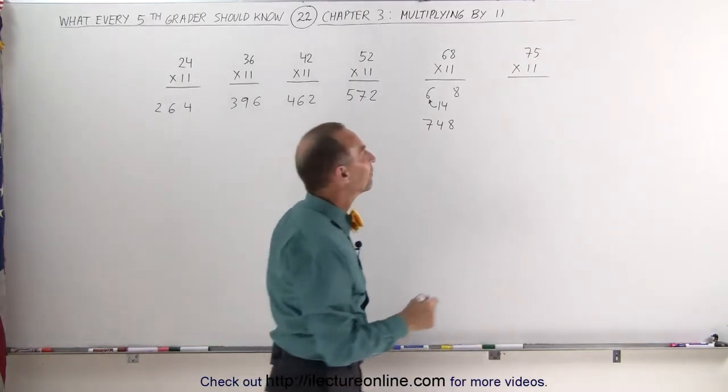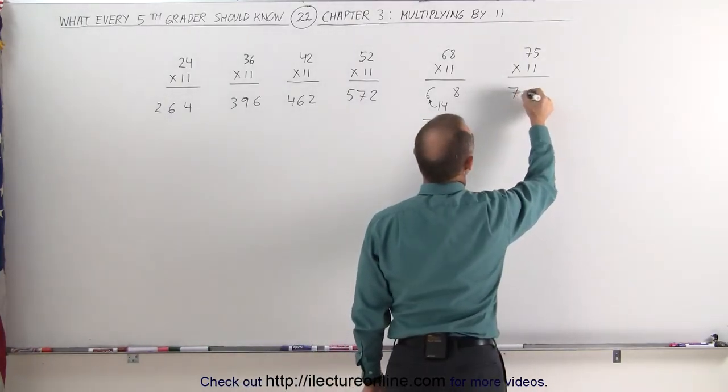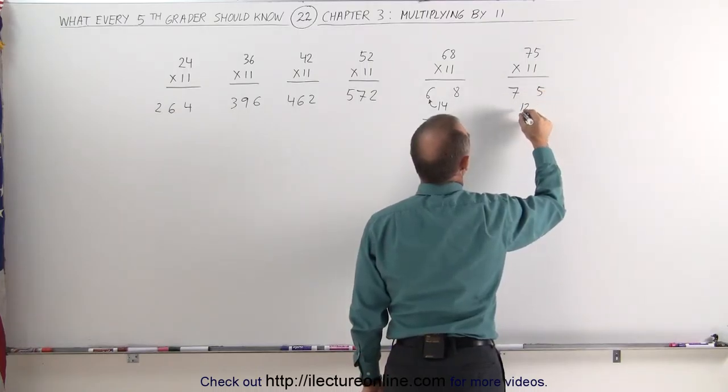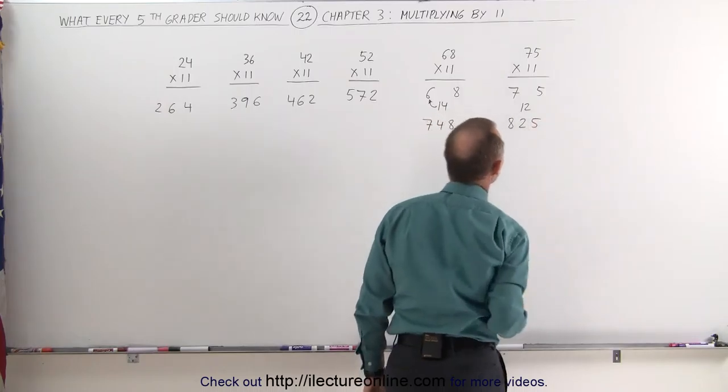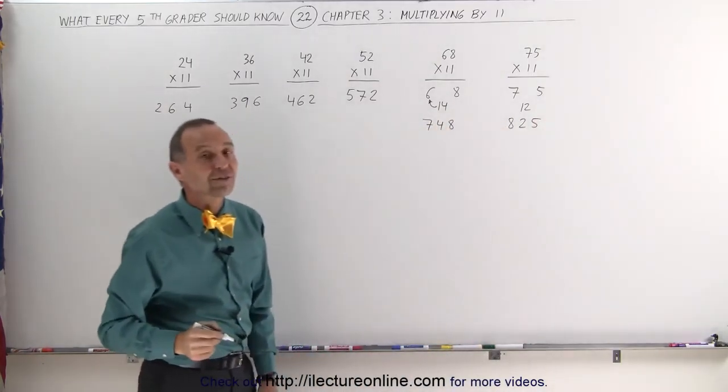Same when we do 75 times 11, you separate the 2. When you add the 2 together, you get 12. You take the 1, add it to the 7, becomes an 8, a 2 and a 5. The answer is 825.